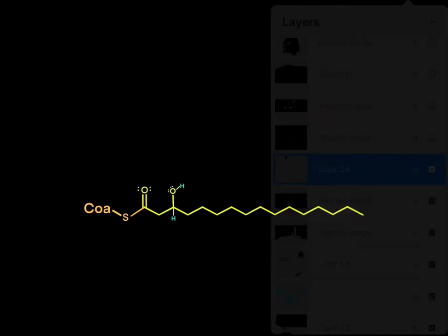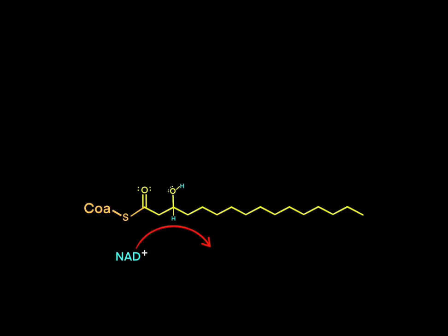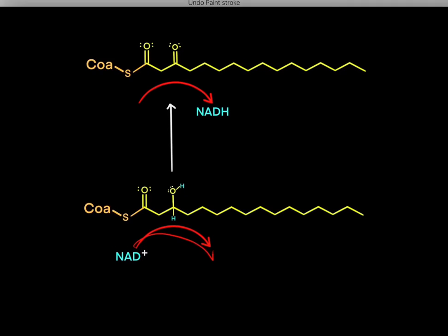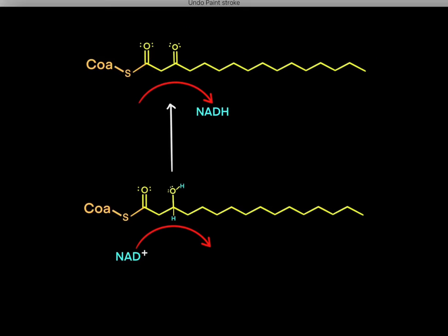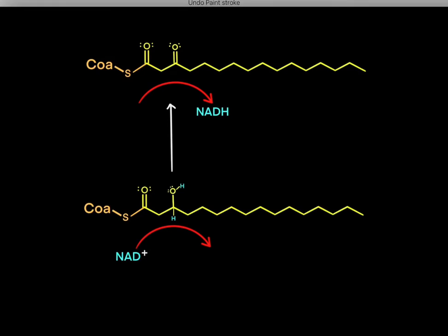Now we focus on the two hydrogens on the hydroxyl-bearing carbon. The oxidized NAD cofactor reacts with this hydroxyl group: NAD gets reduced to NADH, and the hydroxyl gets oxidized into a carbonyl group. This produces the reduced NADH cofactor that can fuel the electron transport chain to create ATP.